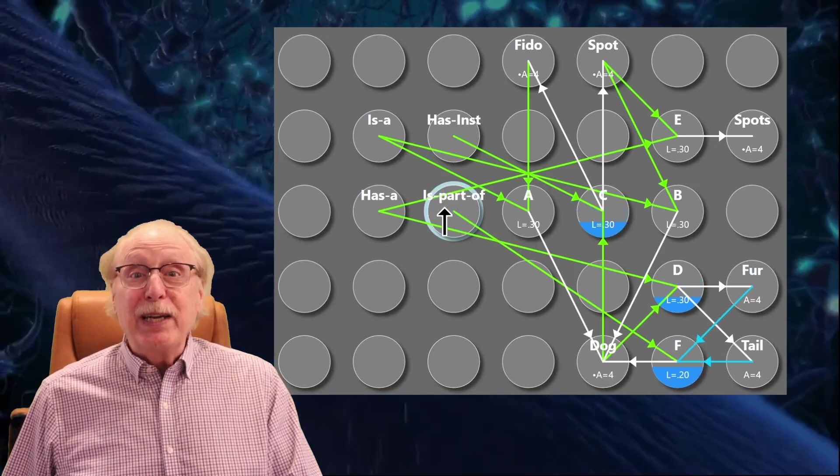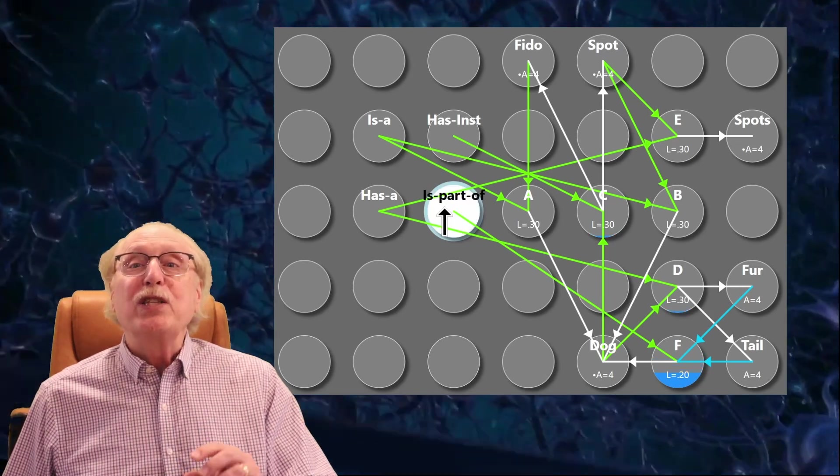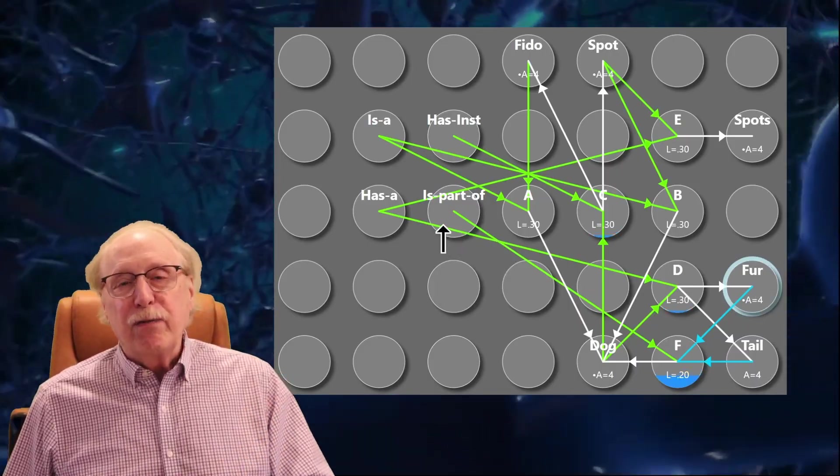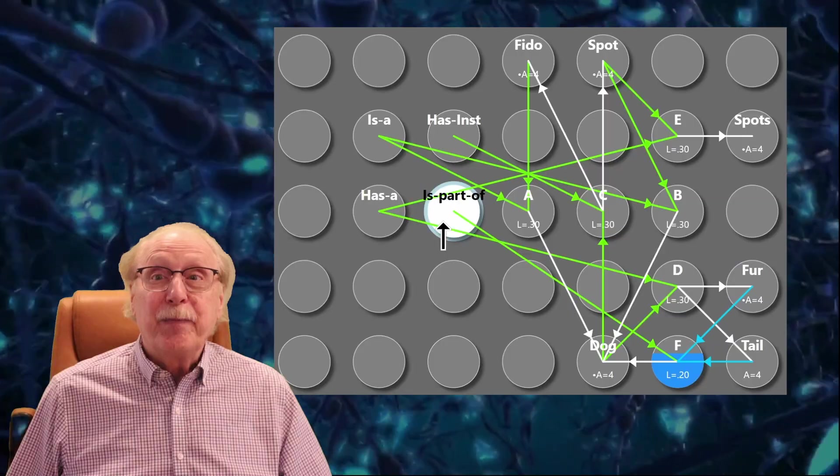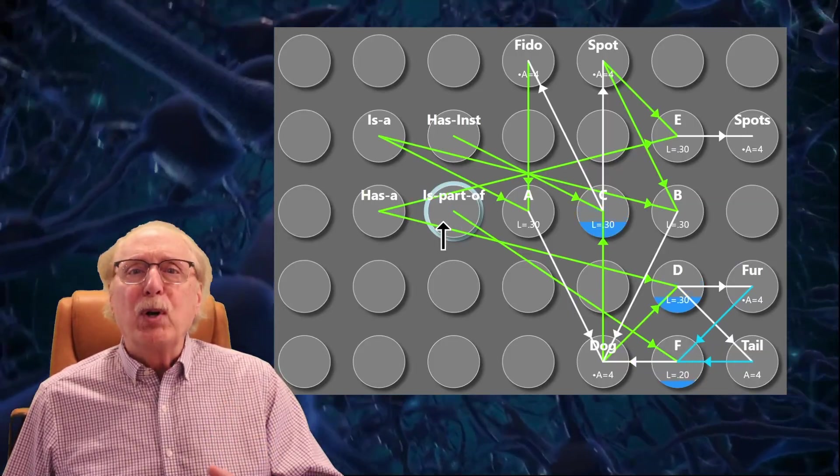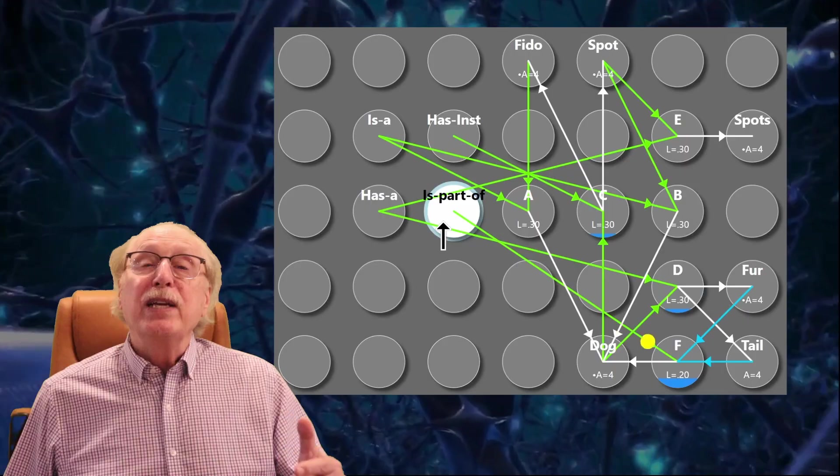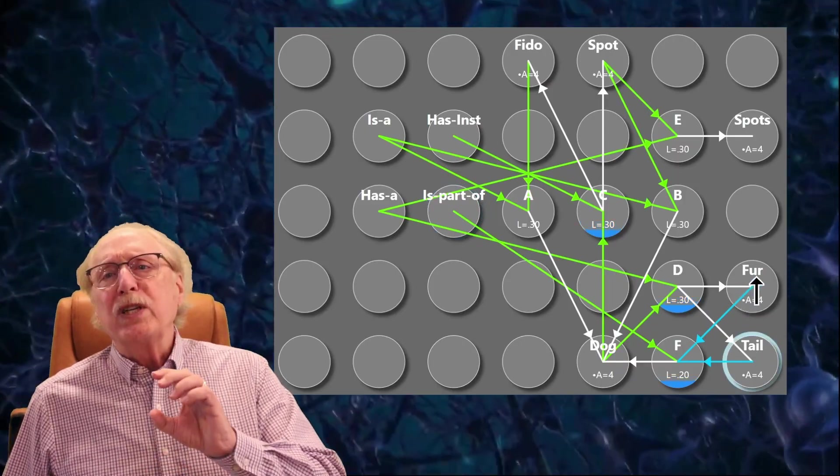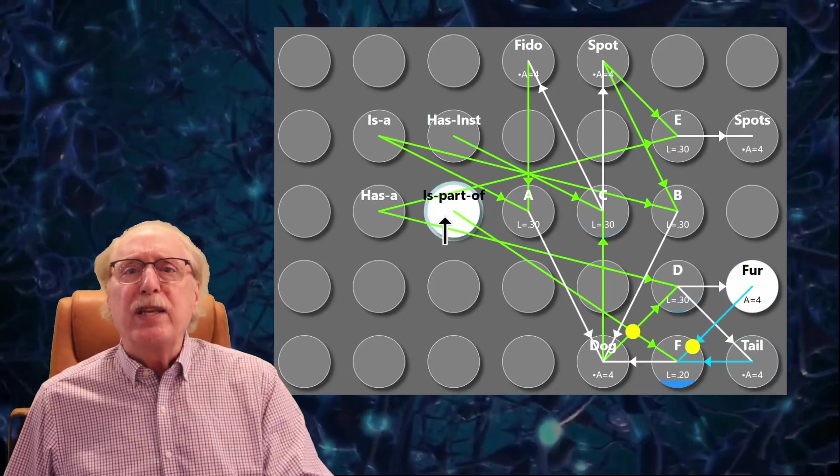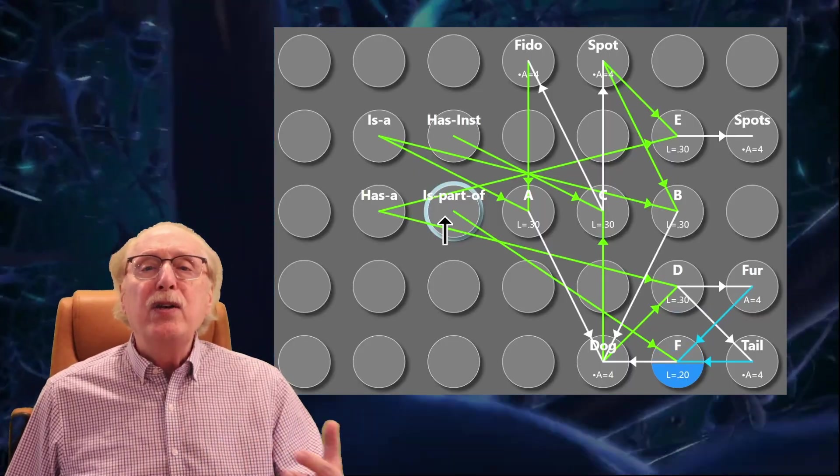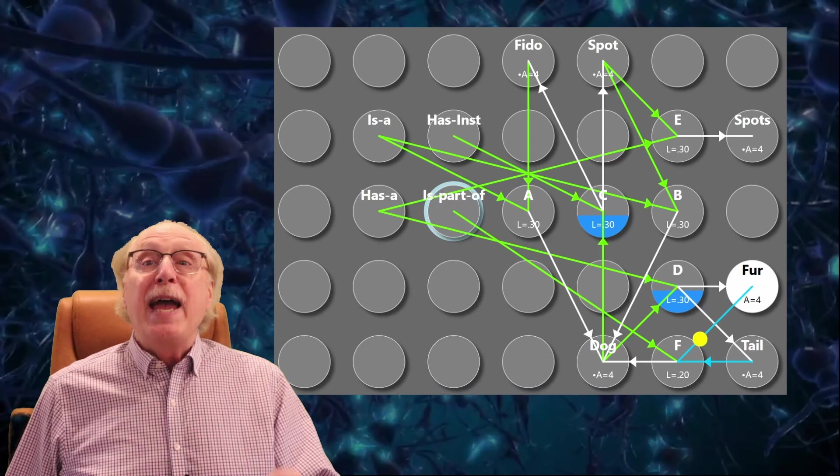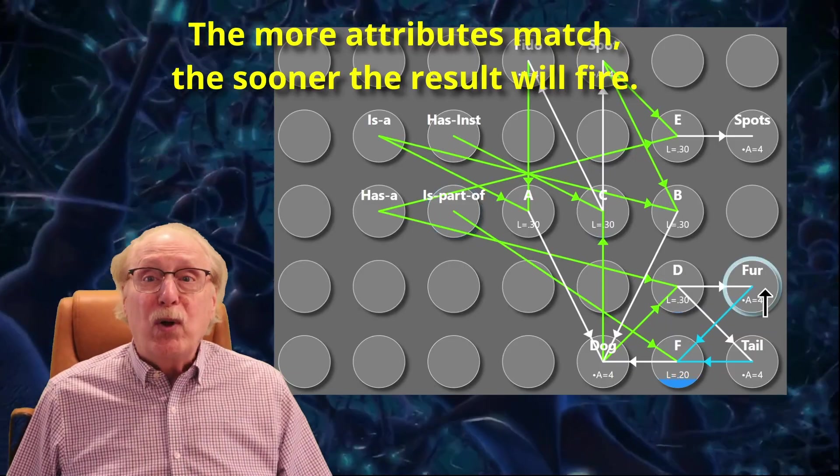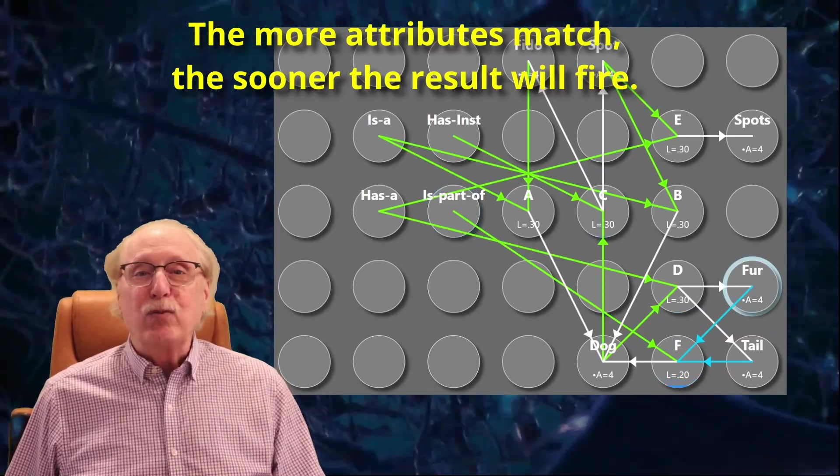As a preview of coming attractions, we need to adjust the synapse weights based on the number of attributes. We can ask what has fur by firing just the fur neuron and the is part of neuron. If I contrive to fire a burst to the is part neuron, dog will fire, but it takes a little longer. I'll provide more details in a future video, but I think you can see that in addition to the hierarchy, you can add any number of attributes to every element in the network and then search by those attributes. You don't need all the attributes, you almost never know them all, but the more you know the quicker the match will be found.